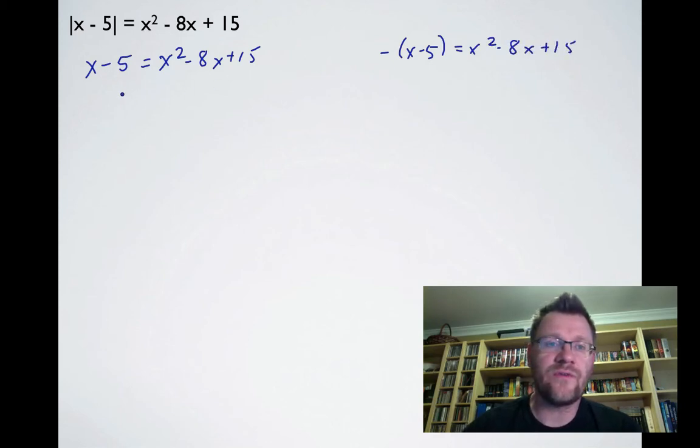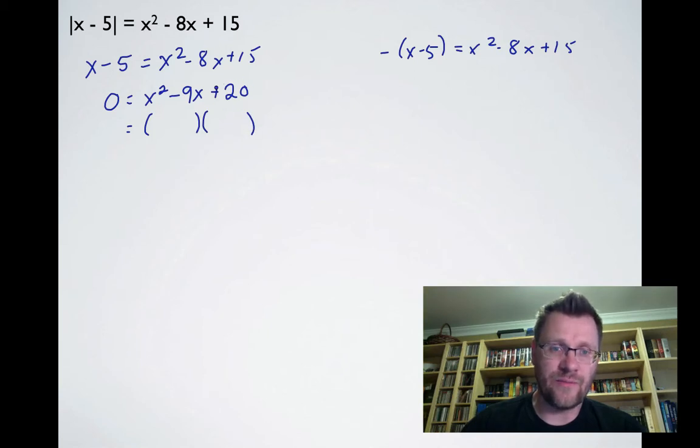To solve the first quadratic equation, we move everything to one side: 0 = x² - 9x + 20. This factors as (x - 5)(x - 4), giving us x = 5 and x = 4.